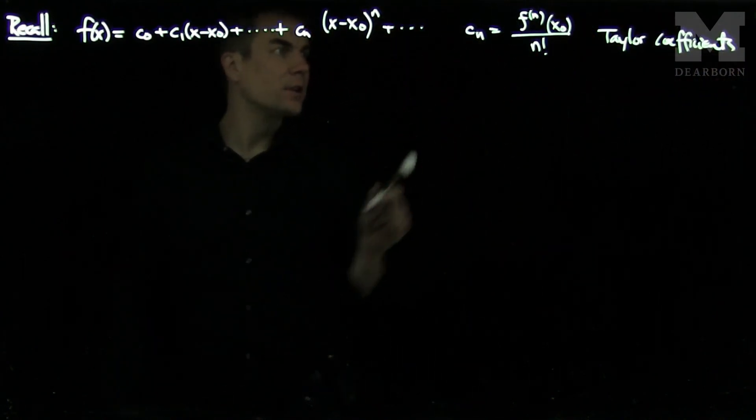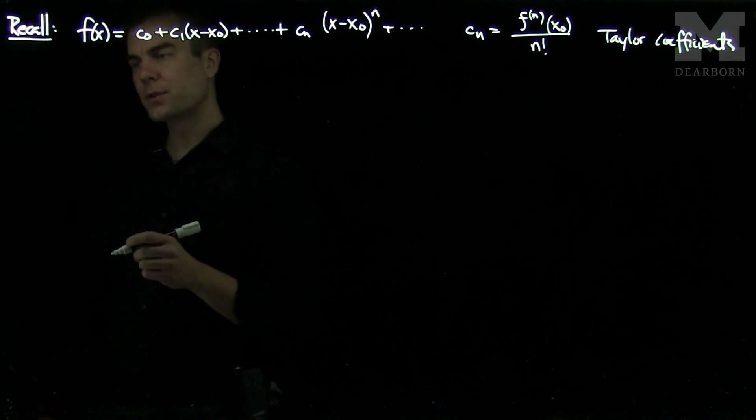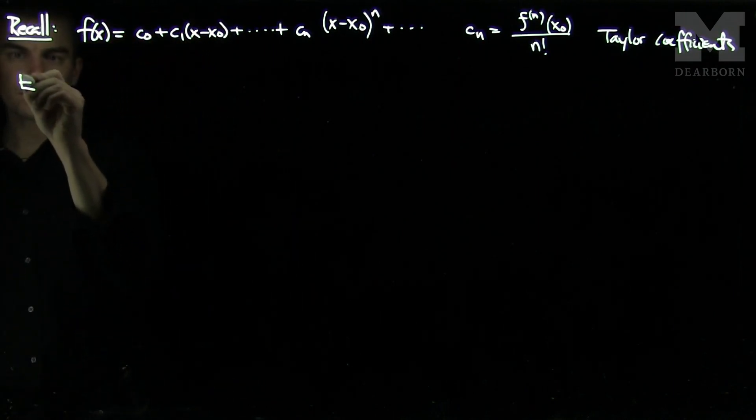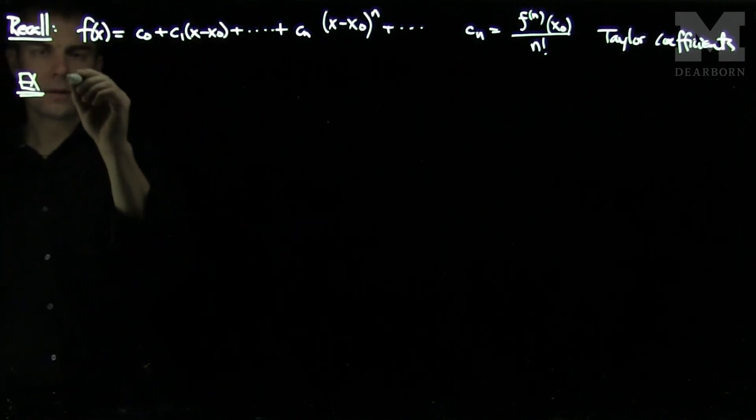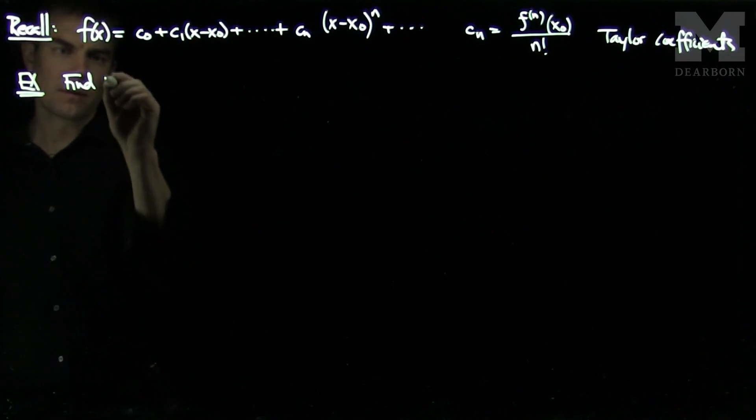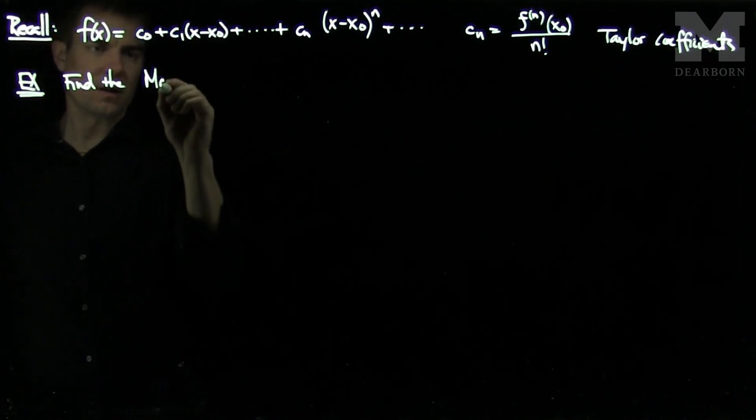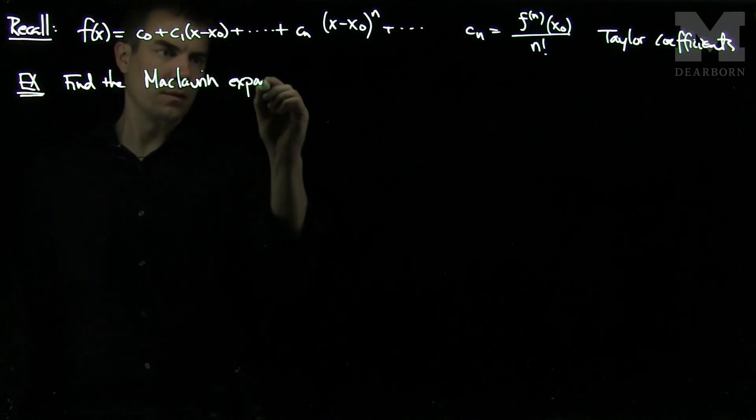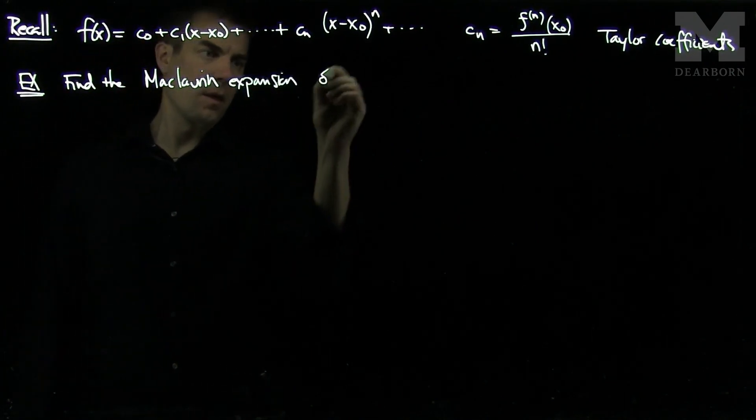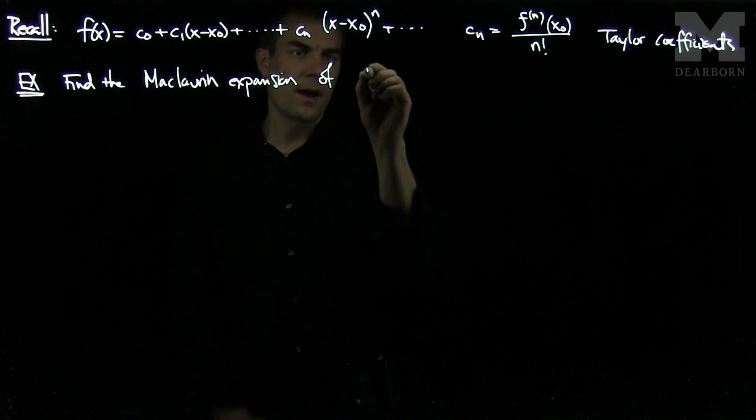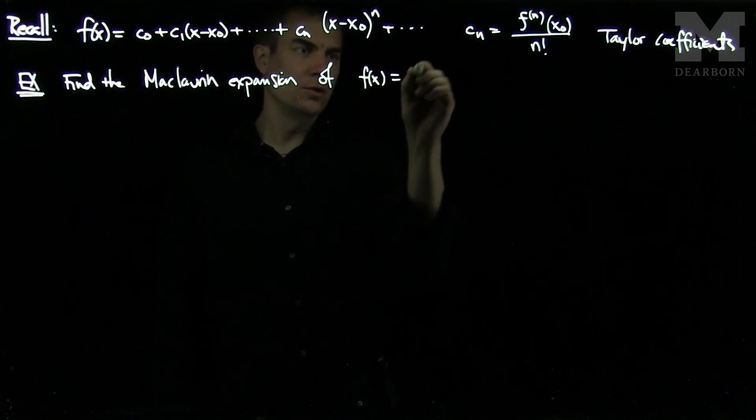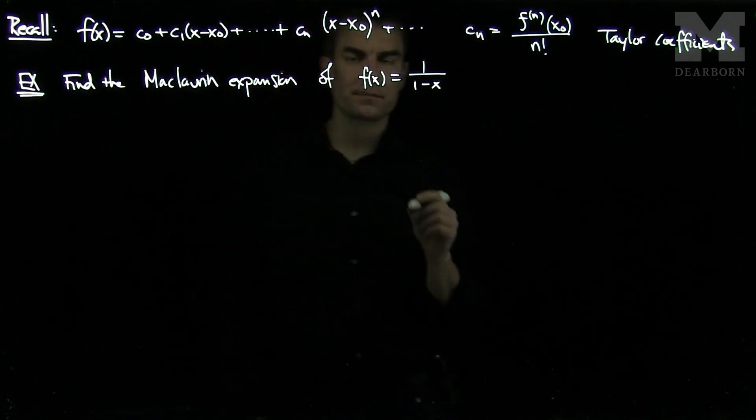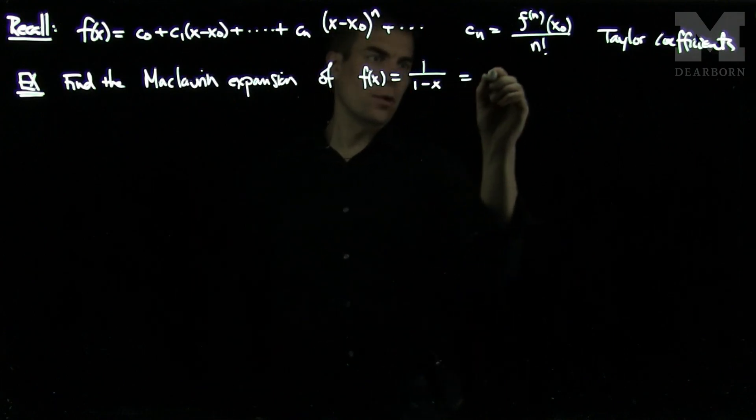And in the case when x0 is 0, we call it the McLaren series. So let's find the McLaren expansion of f(x) which is 1 over 1 minus x. We can write this as (1 minus x) to the negative 1.